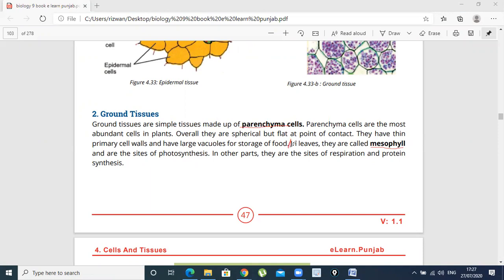So Ground Tissues in Leaves are called Mesophyll Cells. And ground tissue in other parts of the plant are called Parenchyma Cells.